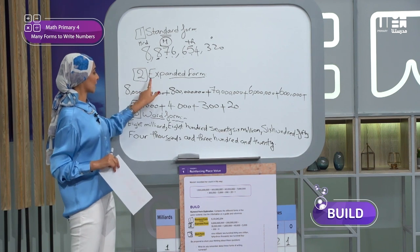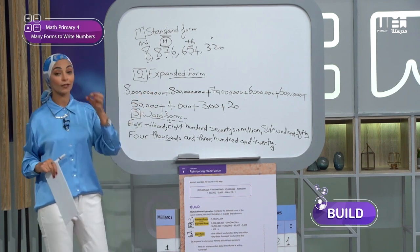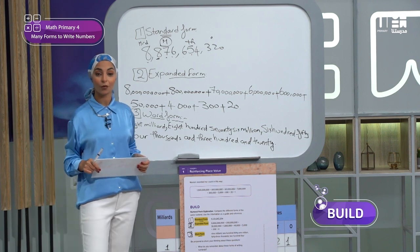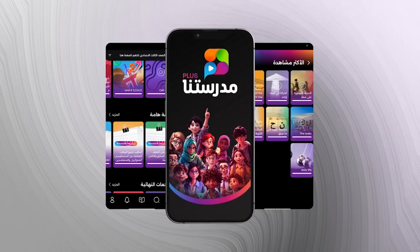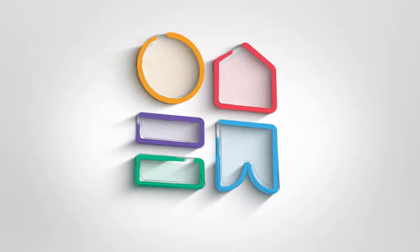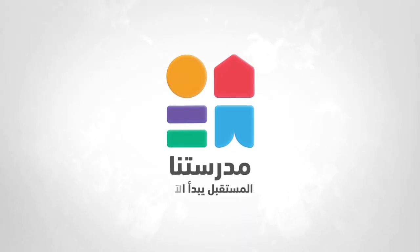And the expanded form, we didn't write the zero. Why? Because the value of zero is zero. You can watch every course of the analysis on Madrasatuna. Thank you.